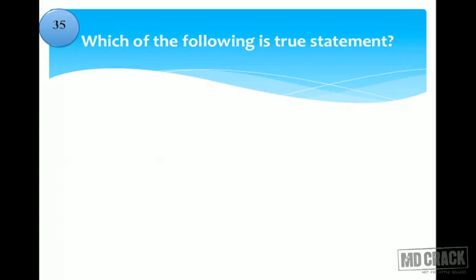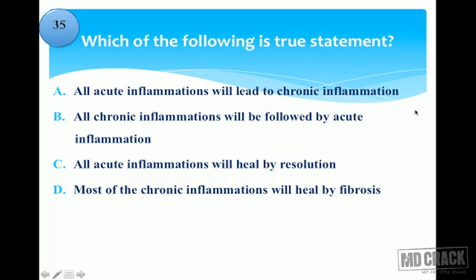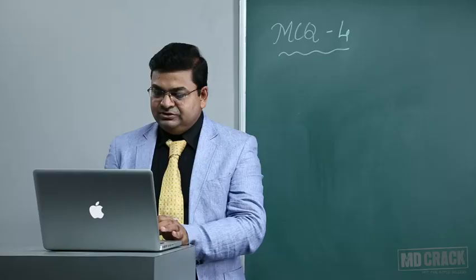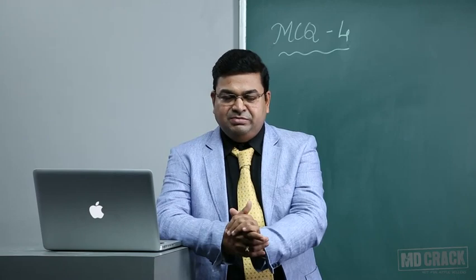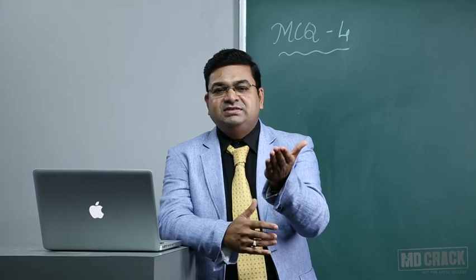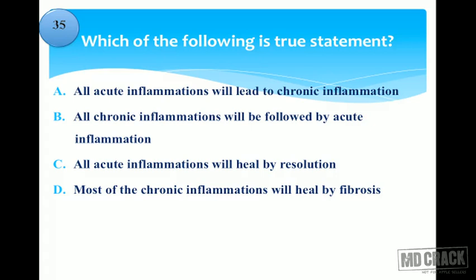Next question: which of the following is a true statement? Options are: all acute inflammations lead to chronic inflammation; all chronic inflammations are followed by acute inflammation; all acute inflammations will heal by resolution; or most chronic inflammations will heal by fibrosis. Remember that inflammation goes hand in hand with repair by fibrosis. The first option is false — most acute inflammatory processes resolve completely, with or without treatment.